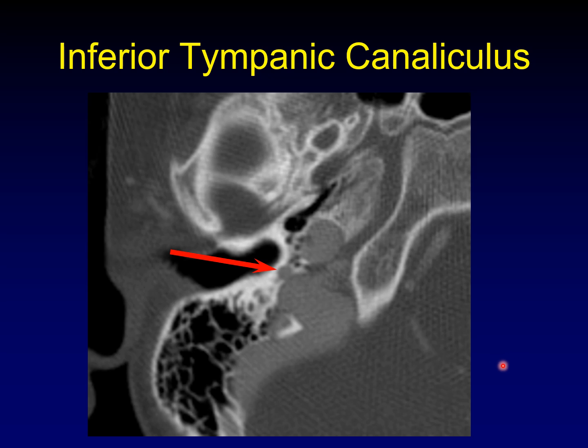The inferior tympanic canaliculus you usually can't see at all, so I'm intentionally showing you an example where the ITC is enlarged. The reason it's enlarged here is that it normally carries the inferior tympanic artery and the inferior tympanic nerve, which are alternately called Jacobson's artery and Jacobson's nerve, and it's carrying it up into the middle ear cavity. It becomes enlarged in situations where there is an aberrant internal carotid artery and the flow is carried not through the carotid foramen, but rather through the inferior tympanic canaliculus as an enlargement of the inferior tympanic artery. Normally, this one you can't even see, so it's not usually confused with a fracture.